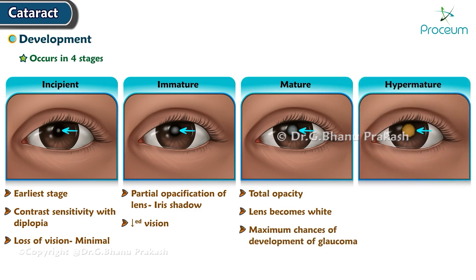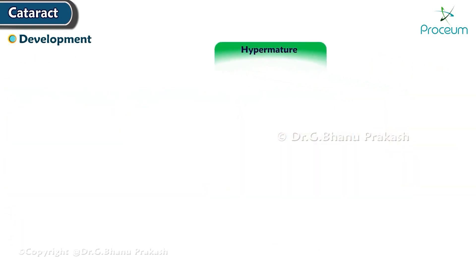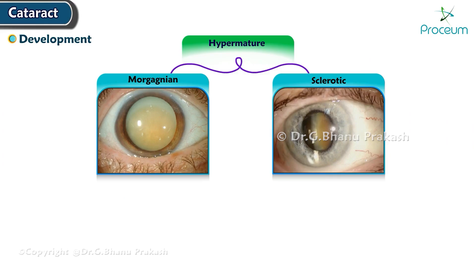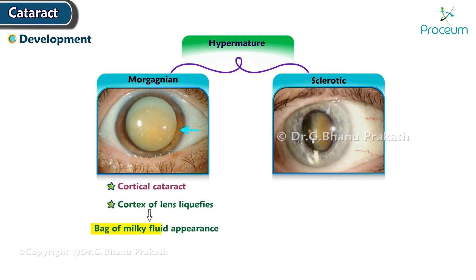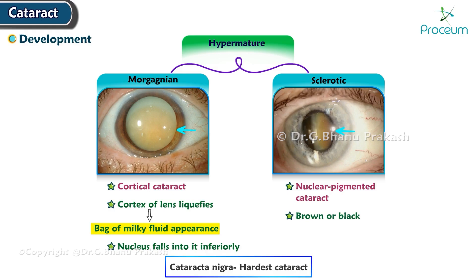Hypermature cataract: the lens shrinks, the capsule shows wrinkling and phacodonesis with subluxation of the lens. This type has two subtypes — Morgagnian and sclerotic. Morgagnian cataract is a hypermature cortical cataract where the cortex liquefies, giving a 'bag of milky fluid' appearance with the nucleus falling inferiorly. Sclerotic cataract is a hypermature nuclear pigmented cataract (brown or black); cataracta nigra is the hardest cataract.